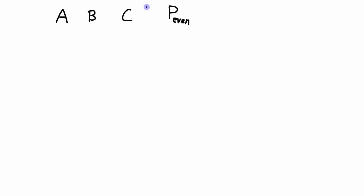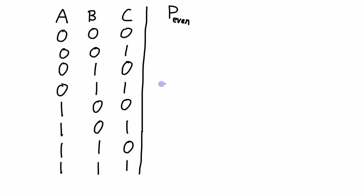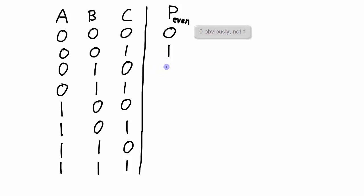We need to come up with all the possible combinations of the inputs. With A, B, and C, we have 0, 0, 0 as one combination — so there are all the possible combinations of inputs. Based on each one of these combinations, we can determine what the even parity bit should be. If we have all 0's at the inputs, the parity bit needs to be a 0 to have an even number of 1's. With 0, 0, 1, the parity bit needs to be 1 to make 2 ones even. Where we already have 2 ones, we need a 0. With 1 one, we need a 1. With 2 ones we need a 0, and so on.